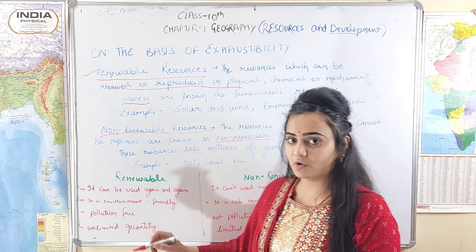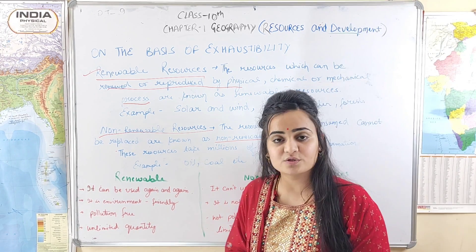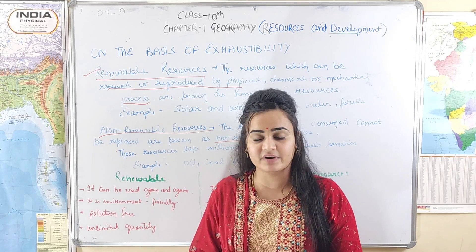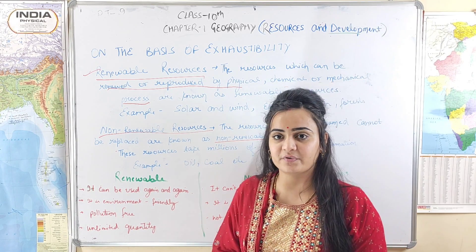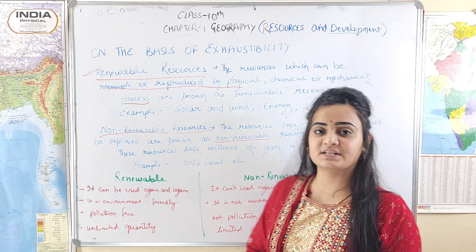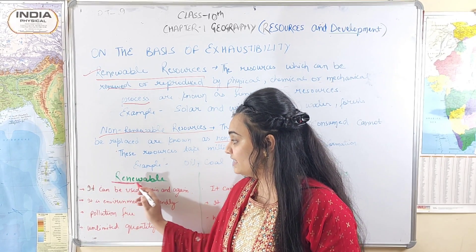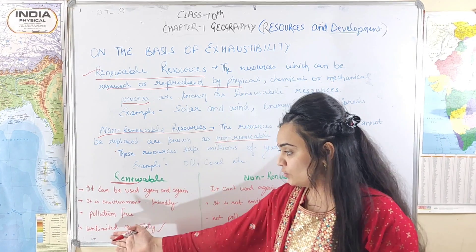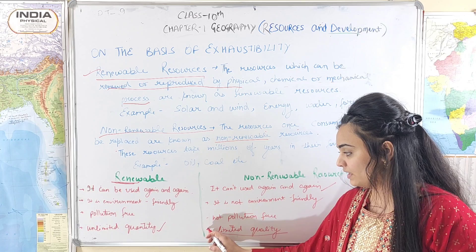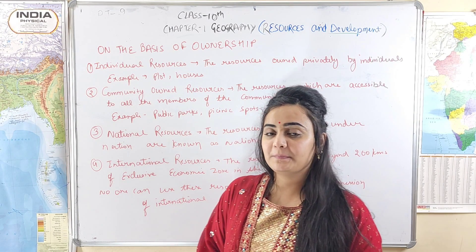Differences between renewable and non-renewable: First, renewable resources can be used again and again, whereas non-renewable resources cannot be used again and again. Second, renewable resources are environment friendly, but non-renewable resources are not environment friendly. Third, renewable resources are pollution free, whereas non-renewable resources are not pollution free. Fourth, renewable resources are available in unlimited quantity, while non-renewable resources are limited in quantity.